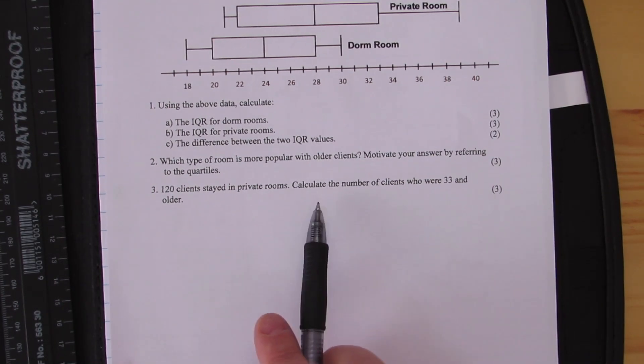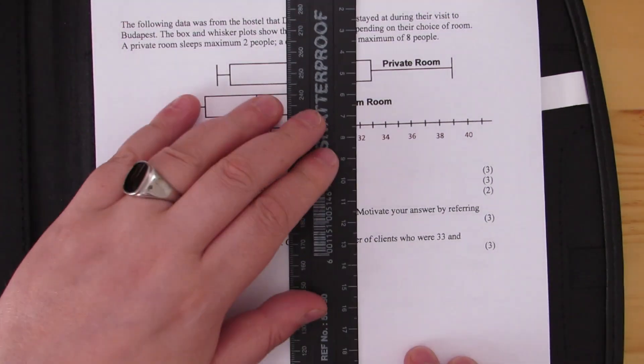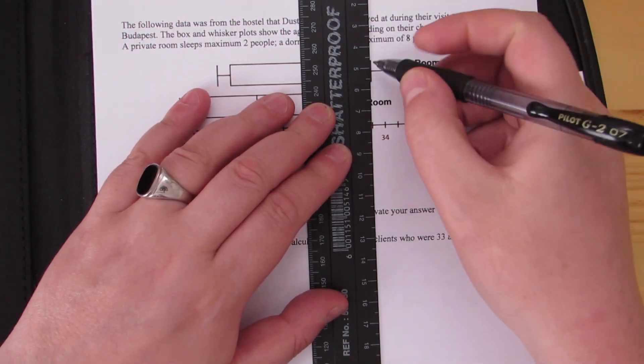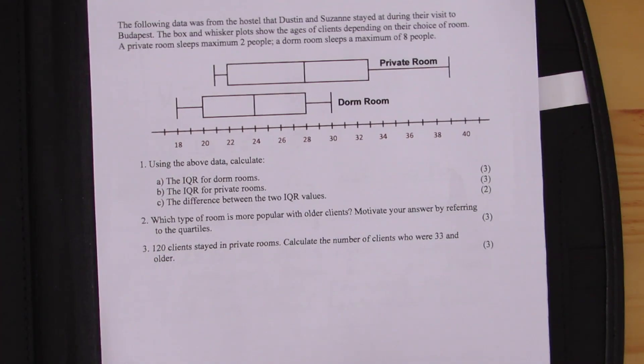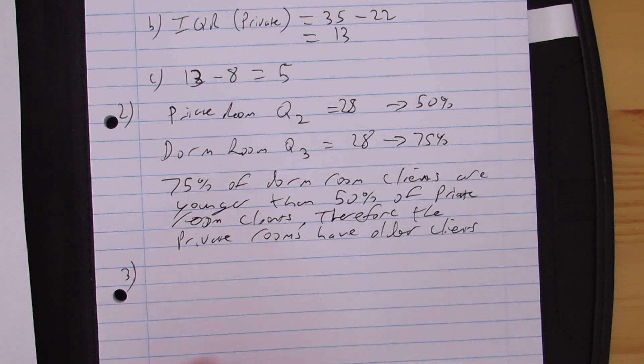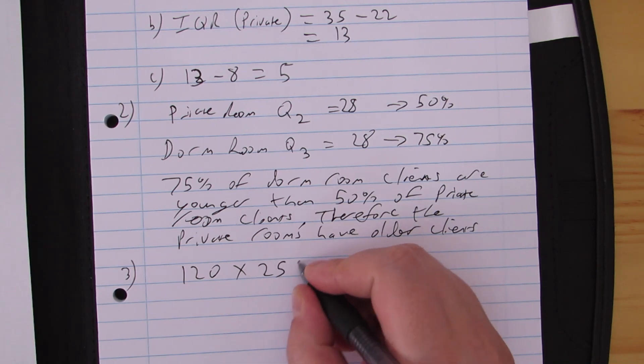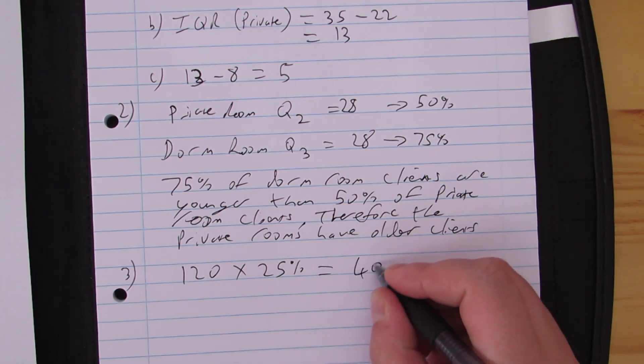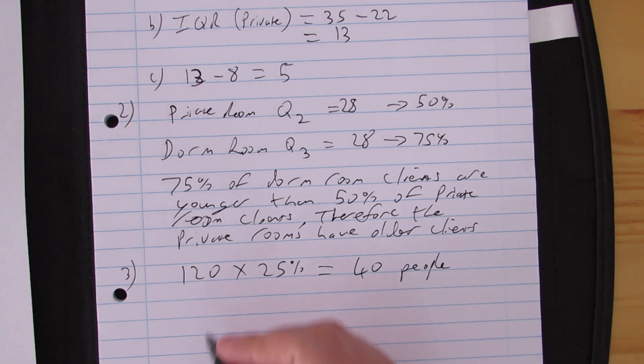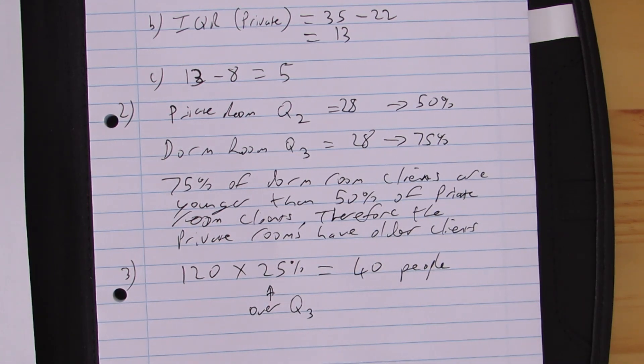The last one: 120 clients stayed in the private rooms. Calculate the number of clients who were 33 and older. If I get my ruler here and I look for 33, there's 32, there's 33 - that is my Q3 for private rooms, which we know is 75 percent. They want to know how many were older than that, so I can just find 25 percent of 120, which gives me 40 people, because that 25 percent is over Q3, and Q3 equals 33 years.